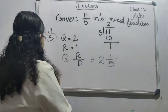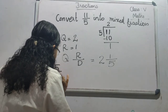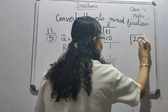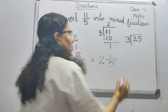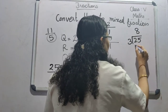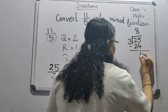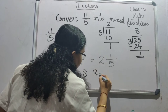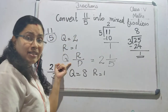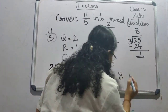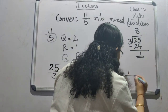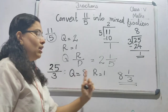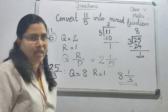Now let us do another question. Let us convert 25/3 into a mixed fraction. When you divide, 8 threes are 24, and subtracting gives a remainder of 1. So here Q is 8 and the remainder is 1. Again we write it in the form of Q R D: quotient is 8, remainder is 1, and divisor is 3. So when you convert 25/3 to a mixed fraction, you get 8 and 1/3.